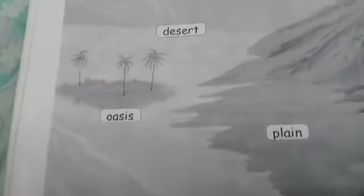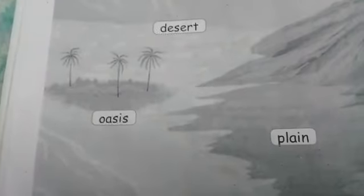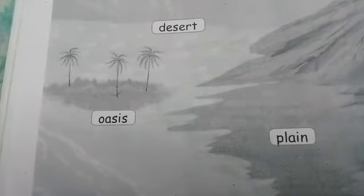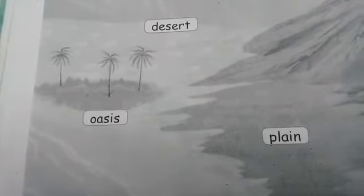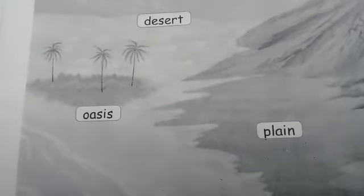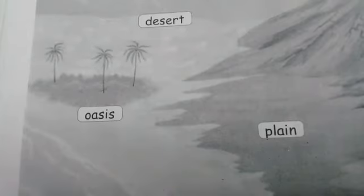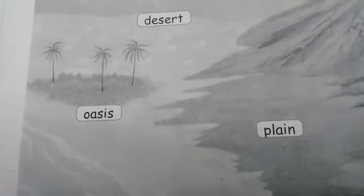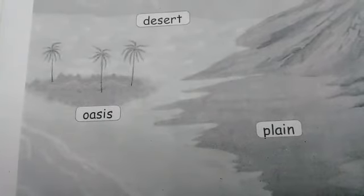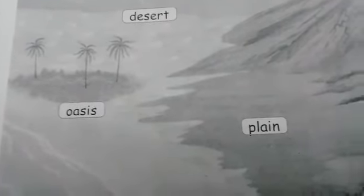Then this one is oasis. Oasis means cholai. A place in the desert where there is water and where plants grow.